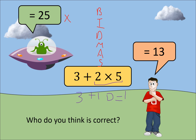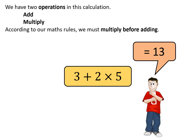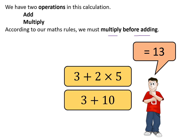We do the multiplication before the addition or subtraction. Division and multiplication have the same level of importance, and so do addition and subtraction. So the person who got 13 is actually correct. We have two operations in this calculation — add and multiply — and according to our maths rules we must multiply before adding. So 2 times 5 is 10, and 3 plus 10 is 13.